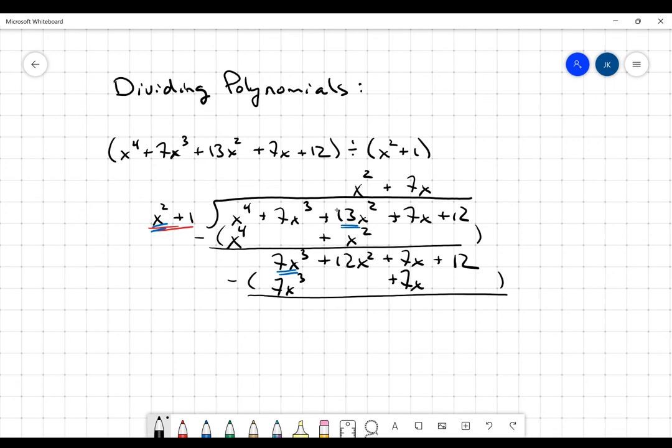And then I'm going to subtract. So 7x cubed minus 7x cubed, those go away. That's what they're supposed to do. 12x squared minus 0x squared will be 12x squared. 7x minus 7x, 0. And then 12 minus 0 is just going to be 12.